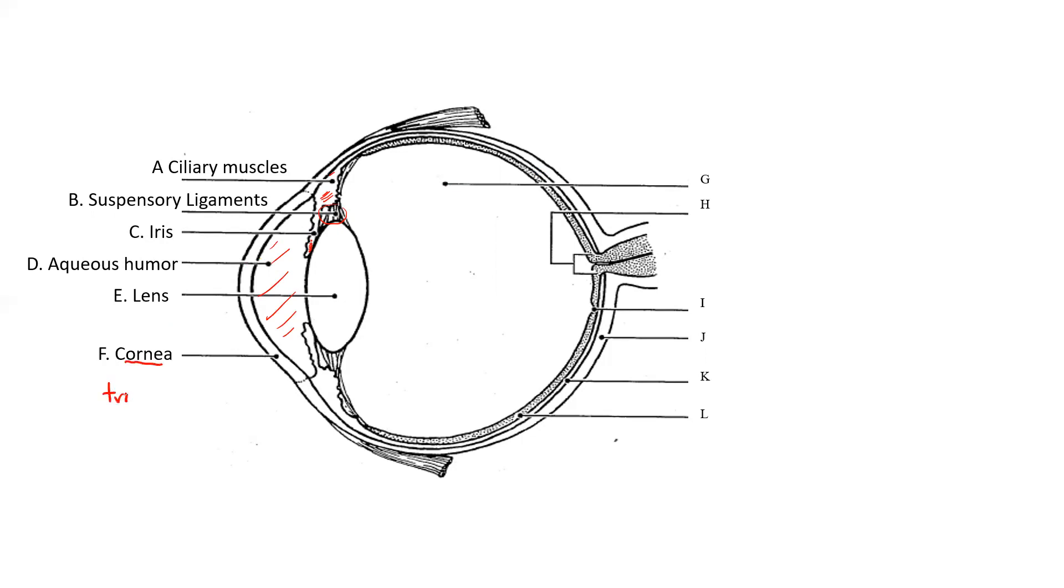This is the cornea. The cornea is transparent. It allows light to go through it. So it's a transparent portion of the outer part. The aqueous humor is a gel-like fluid that keeps the eye shape. It supports the eye.